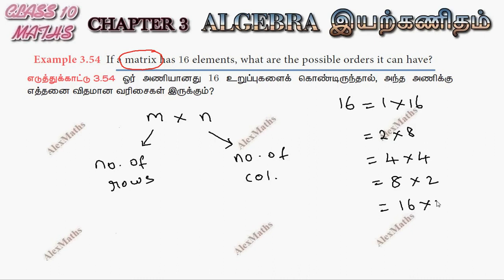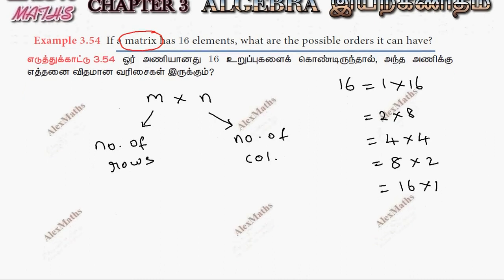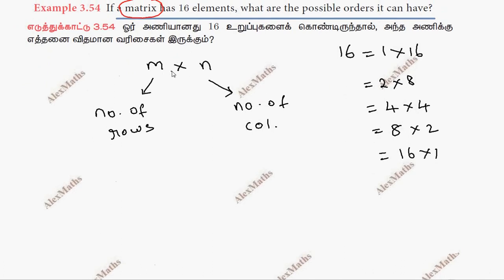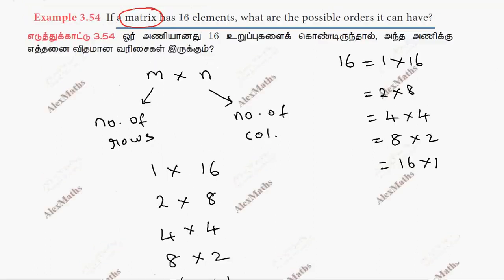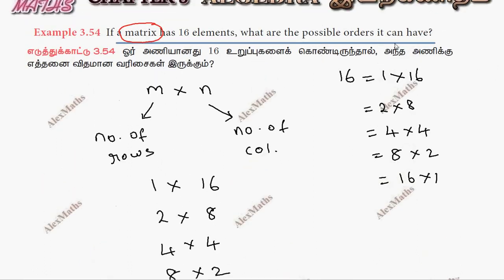So 16 into 1. This is the possibility. So if m and n are 1 by 1, 1 row and 16 columns, or 2 rows and 8 columns, or 4 rows and 4 columns, 8 rows and 2 columns, and finally 16 rows and 1 column. So this is the possibility. So what are the possible orders?